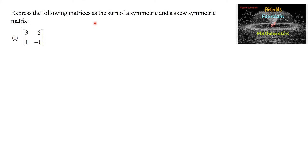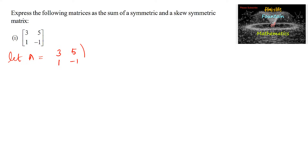Express the following matrices as the sum of a symmetric and skew symmetric matrix. First one: let A be equal to the matrix 3, 5, 1, and negative 1.